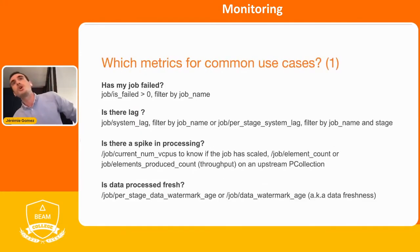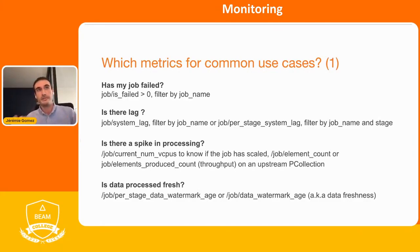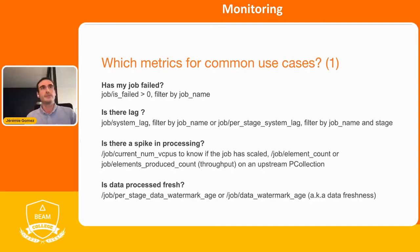Let's have a look at the common use cases and see what metrics we would use. For has my job failed, you'd use the native metric is_failed and check if it's more than zero. However, this is only useful for batch pipelines, because for streaming pipelines your job actually never fails — if something doesn't work, it will retry forever.